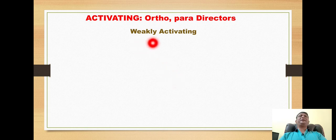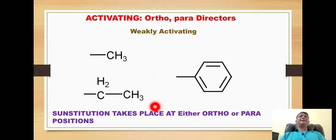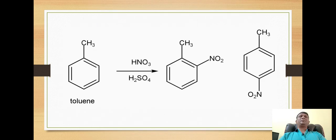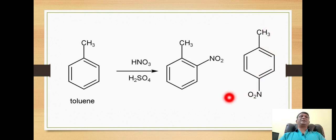The next subclass is the ortho-para directors which are weakly activating. This group includes examples like methyl, ethyl, and the phenyl ring. The rate of reaction is slower, but substitution still takes place at the ortho and para positions because alkyl and aryl groups are electron-releasing groups. For example, when toluene is reacted with nitric acid in the presence of sulfuric acid, nitration takes place and the nitronium ion electrophile is directed at either ortho or para, with the para-substituted product being the major one.